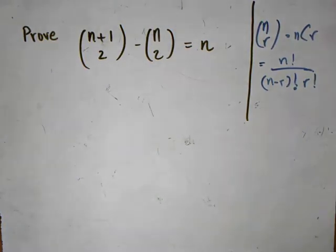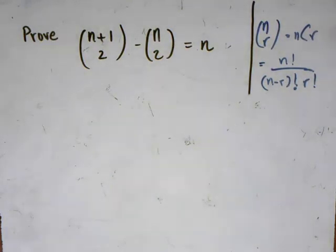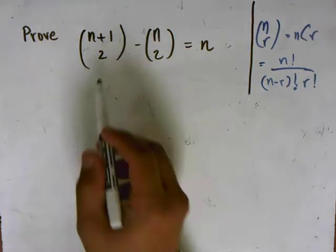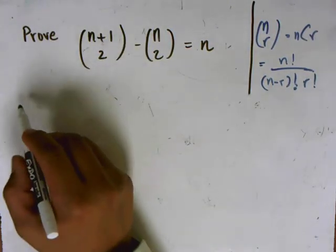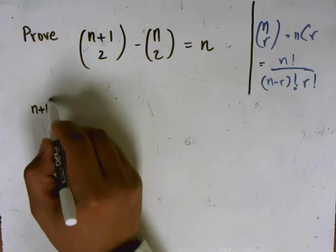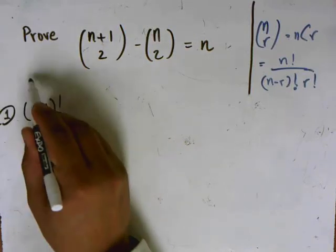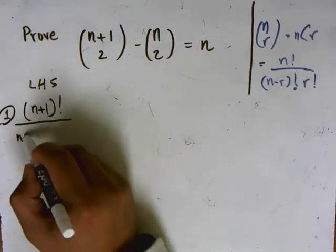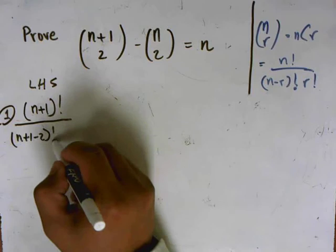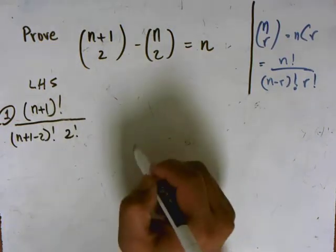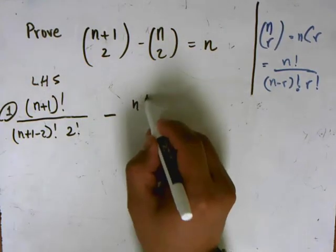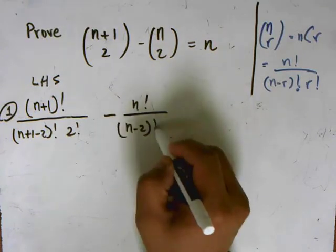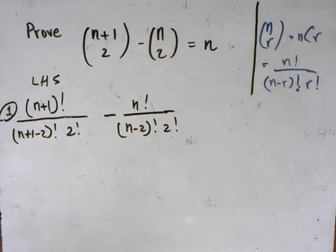With that in mind, we can begin with our proof, and I'm going to start with the left-hand side. I'm going to write it in terms of factorials: n plus 1 factorial over n plus 1 minus 2 factorial times 2 factorial, minus n factorial over n minus 2 factorial times 2 factorial.